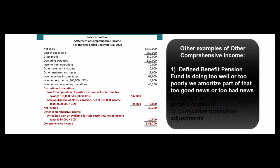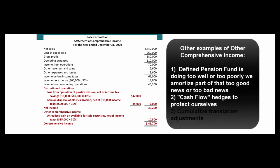Other things that qualify for other comprehensive income — important stuff that hasn't happened yet. If our pension fund does really well or really poorly, we'll amortize some of that good or bad news out of accumulated other comprehensive income. What also might qualify is if we have a hedge on an investment or foreign transaction treated as a cash flow hedge — that's for advanced accounting. And finally, if we have a foreign subsidiary and translate their financials into U.S. dollars, there may be a translation adjustment.